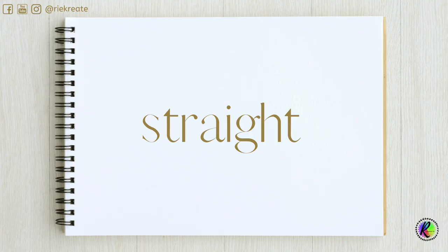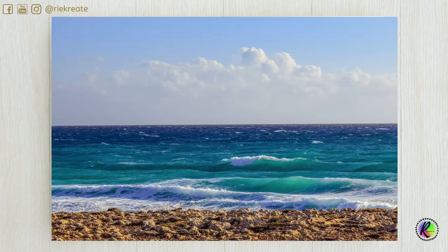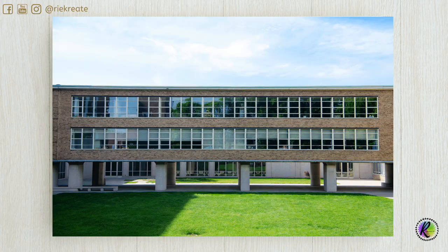Straight lines are lines that don't bend — they maintain the same direction. Horizontal lines are lines that run from west to east or left to right. They suggest a feeling of quiet, serenity, and stability. Objects parallel to the earth are at rest in relation to gravity.